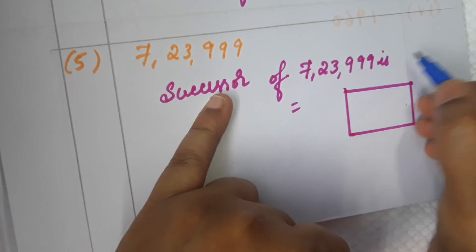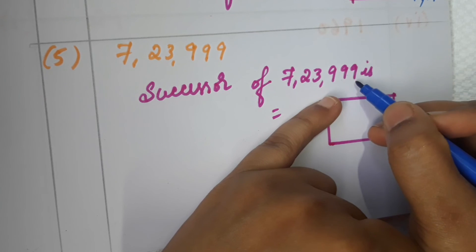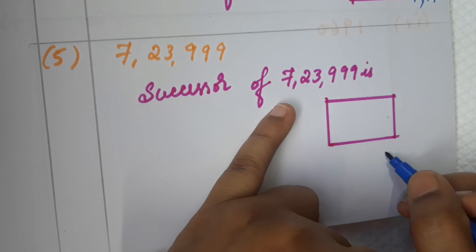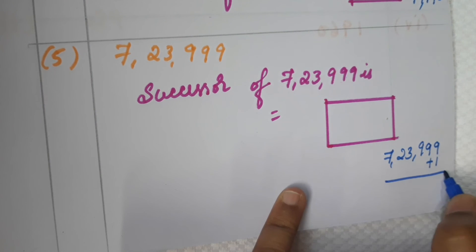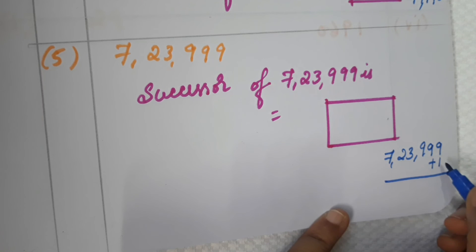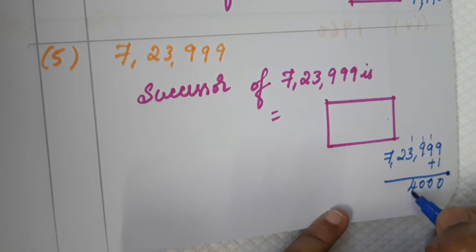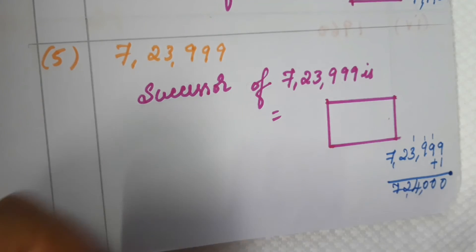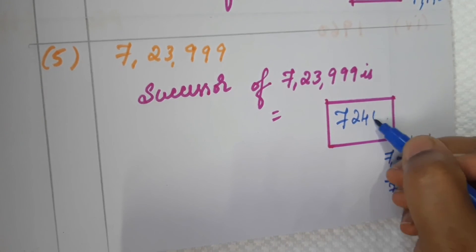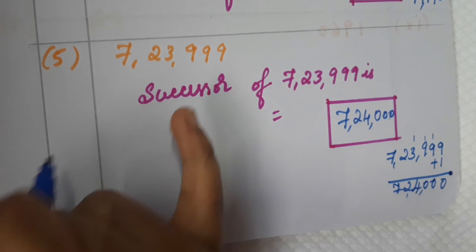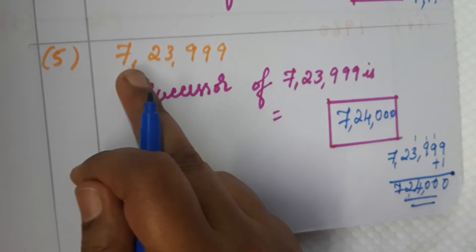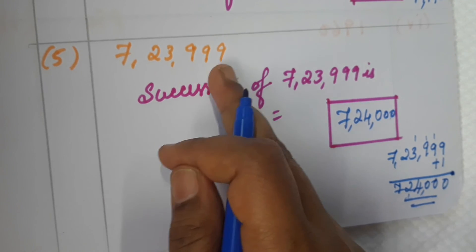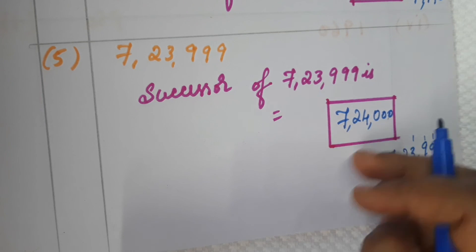Successor of seven lakh twenty-three thousand nine hundred and ninety-nine. Here we have to add one. Nine plus one is ten, carry one. One plus nine is ten, carry one. One plus nine is ten, carry one. Four. Two. Seven. Answer is seven lakh twenty-four thousand. After seven lakh twenty-three thousand nine hundred and ninety-nine is seven lakh twenty-four thousand.